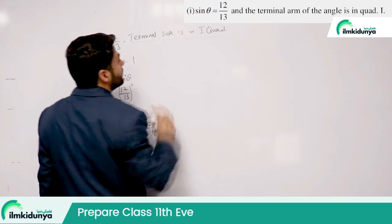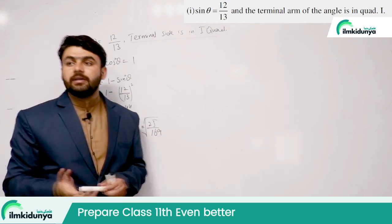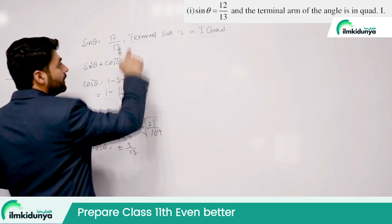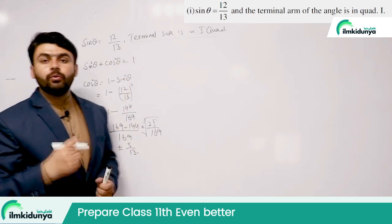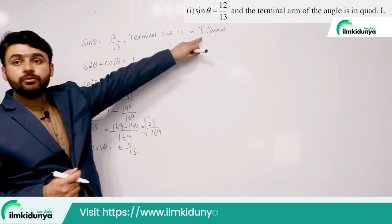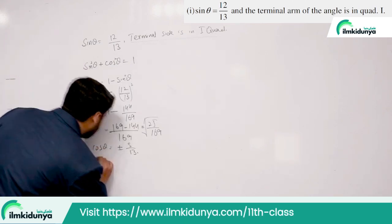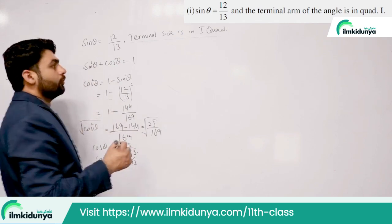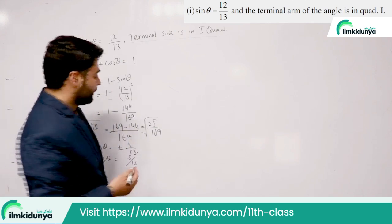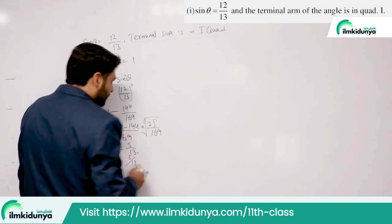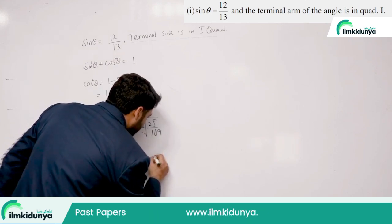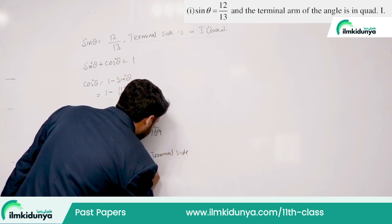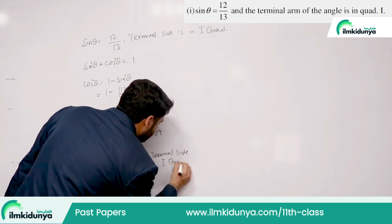This information tells us that the terminal side of the angle is in the first quadrant. In the first quadrant, cos θ equals a positive value. So we choose the positive value: cos θ = 5/13, justified because the terminal side is in the first quadrant.